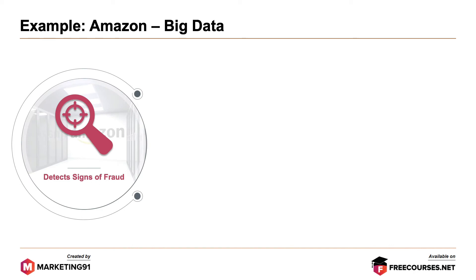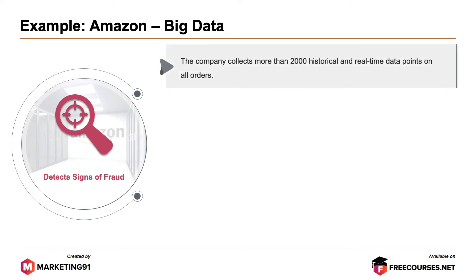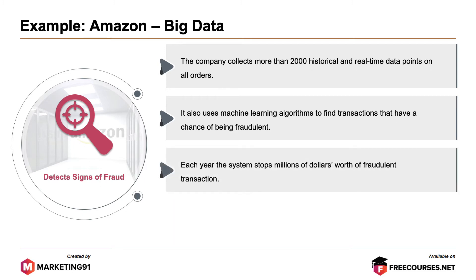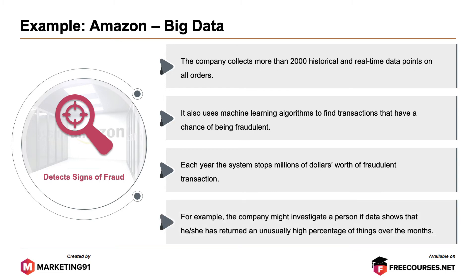Data also helps Amazon detect signs of fraud. Amazon collects more than 2,000 historical and real-time data points on all orders, and uses machine learning algorithms to find transactions that have a chance of being fraudulent. Each year, the system stops millions of dollars worth of fraudulent transactions. For example, the company might investigate a person if data shows that he or she has returned an unusually high percentage of items over the months.